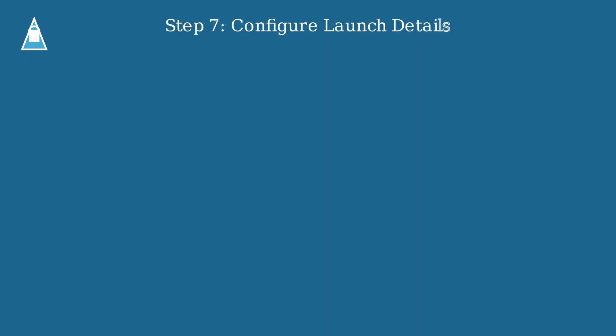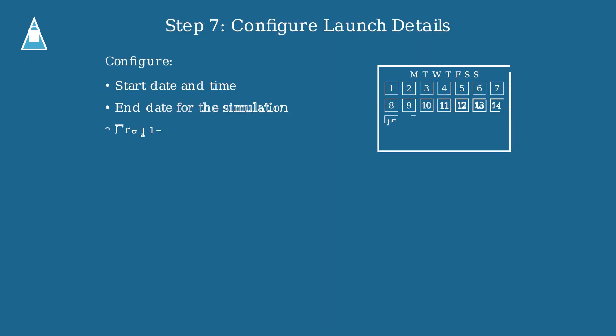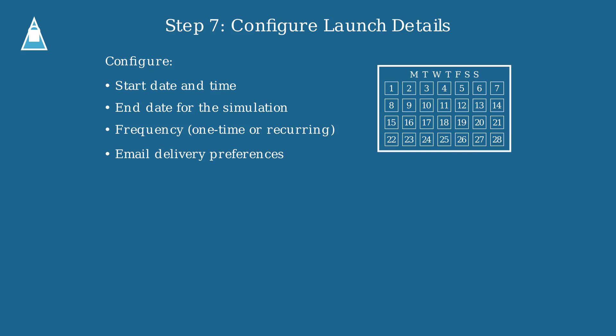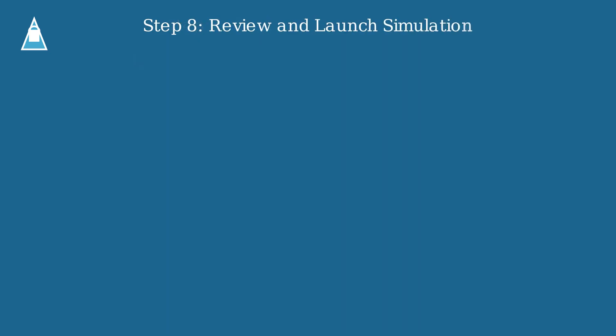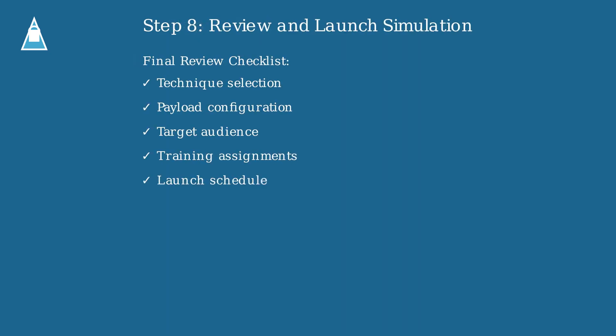Configure the launch details for your simulation, including the start date and time, end date, and frequency. You can set up one-time or recurring simulations and customize email delivery preferences to make the simulation more realistic. Before launching, review all settings to ensure your simulation is properly configured — check your technique selection, payload configuration, target audience, training assignments, and launch schedule.